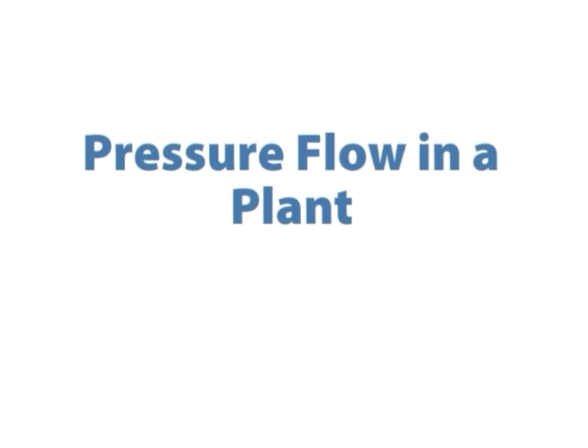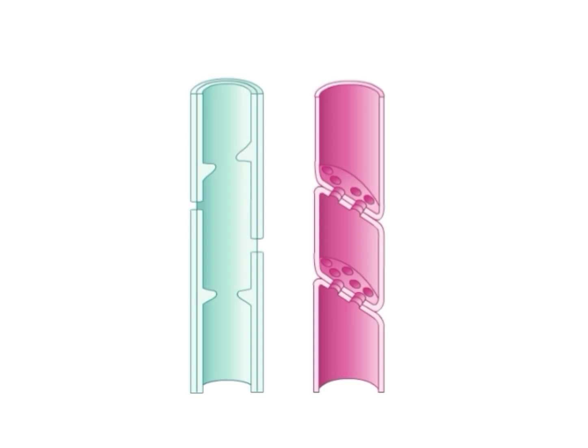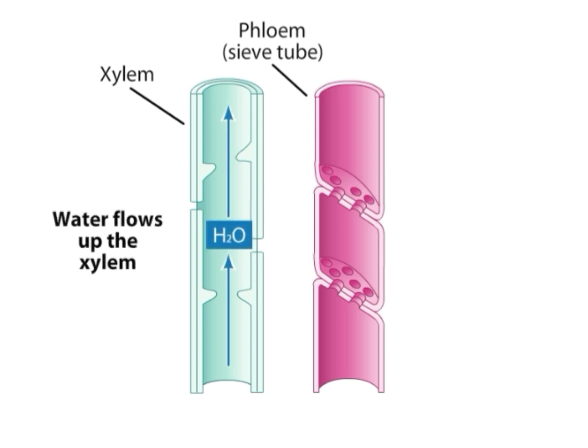Today let's discuss pressure flow in a plant, mainly the vascular system, which includes two elements: xylem and phloem. Xylem conducts water and minerals, whereas phloem conducts sugars from the leaves to all parts of the plant body. Xylem conducts water from bottom to top — from roots to leaves — through xylem tracheids and xylem vessels.